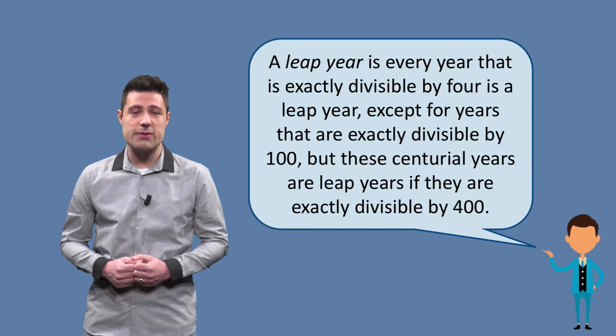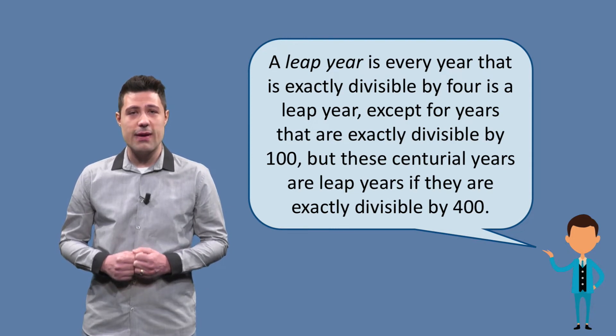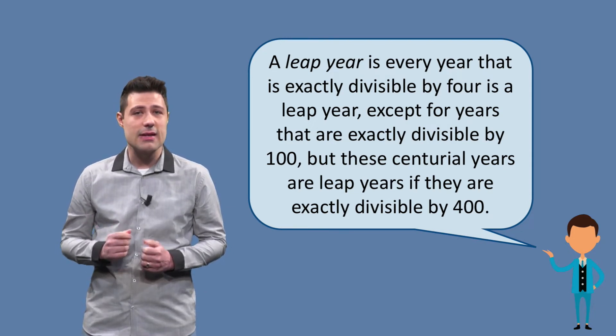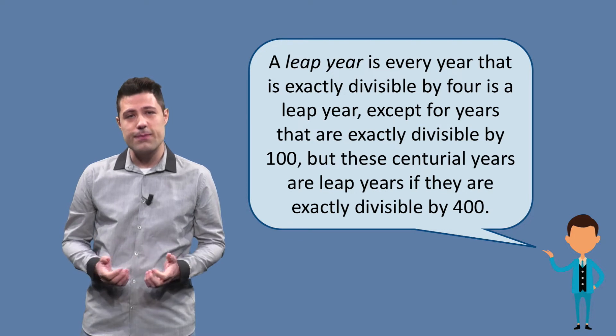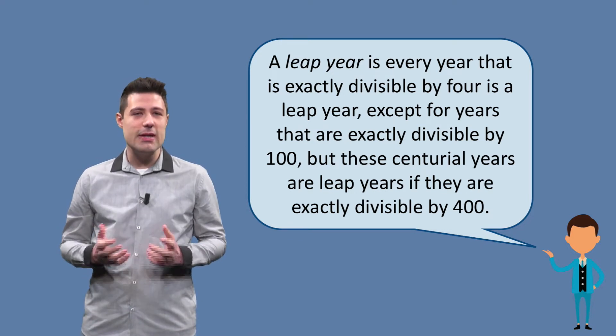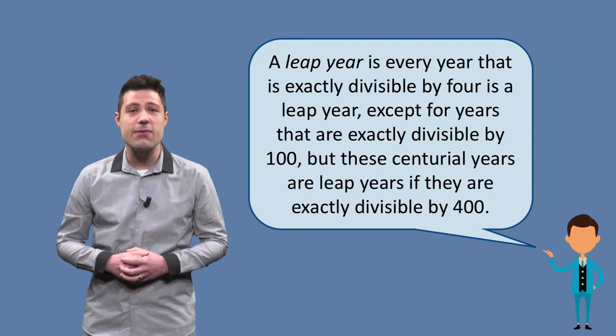However, we have some exceptions. If the year can also be divided by 100 exactly, then it is not a leap year. However, these years can still be leap years if they are divided by 400.